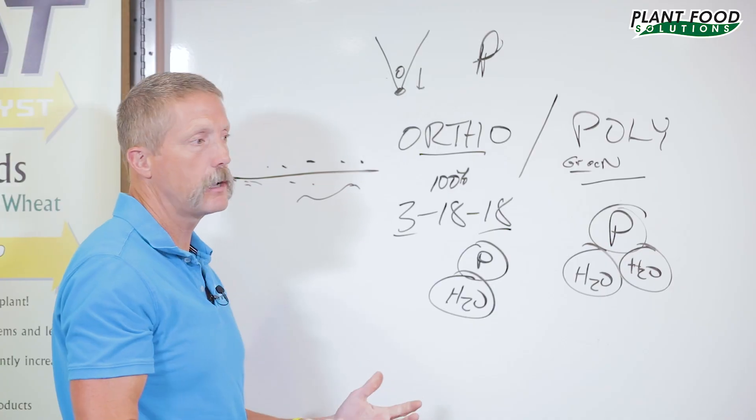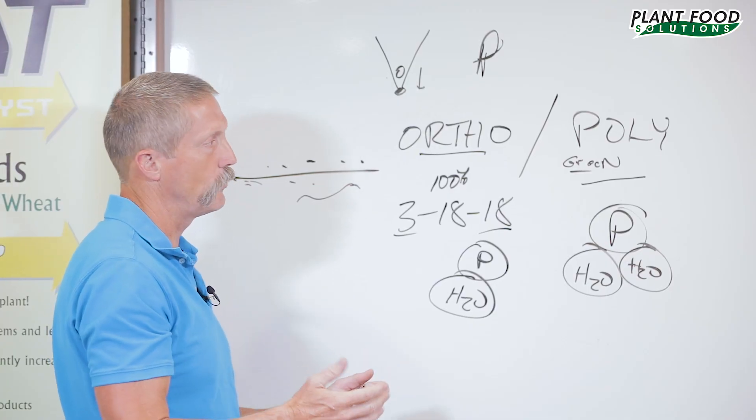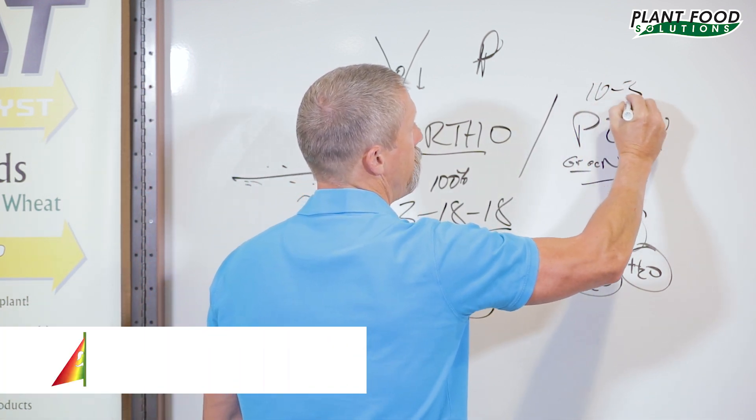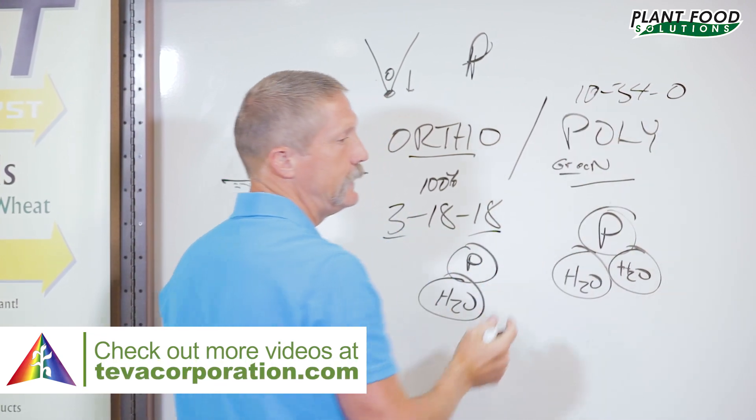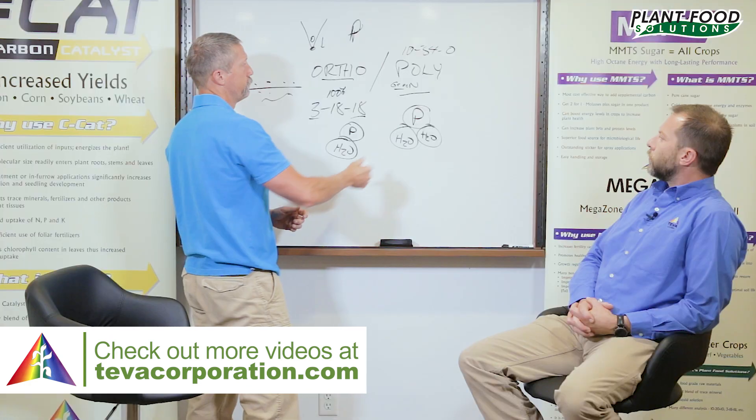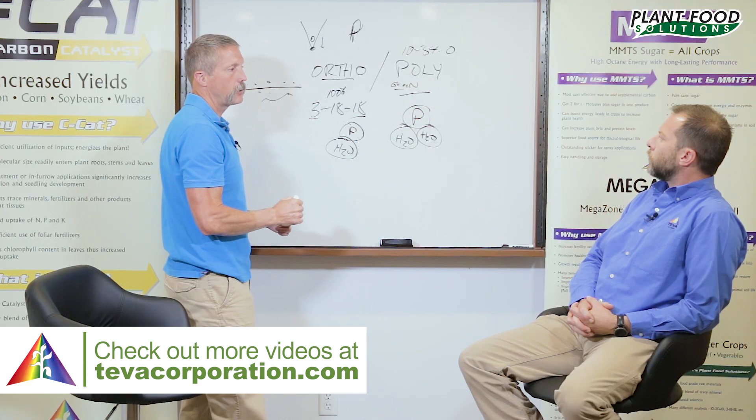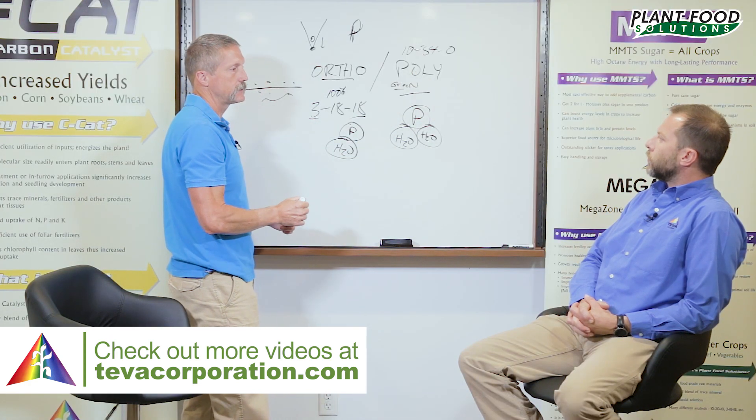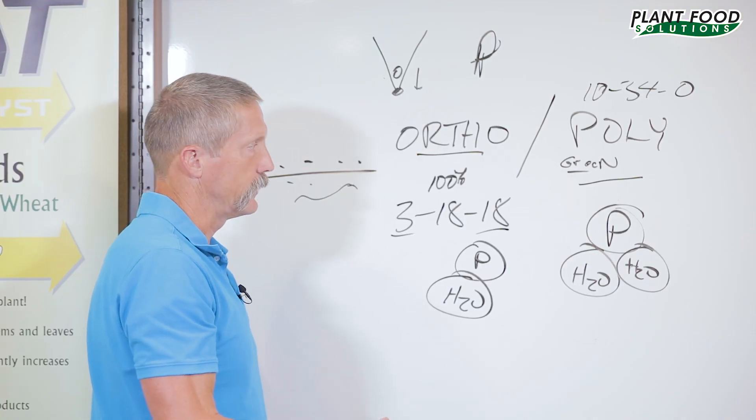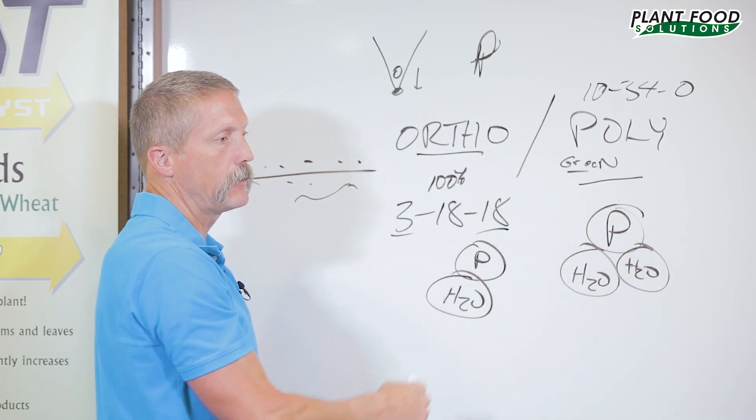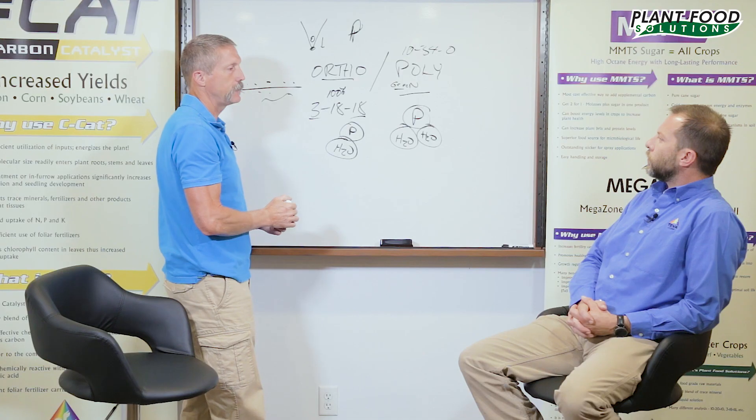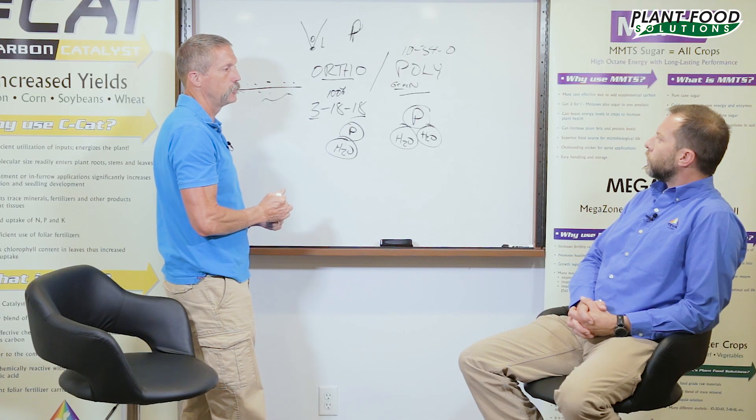There's lots of products out there. Like a good example, this 10-34-0 is a polyphosphate. That's why it's green. You really need to study on what you're getting. They like using poly in the product because it's cheaper. So they can sell it to you cheaper, but just remember, it's like getting a gallon of gasoline or a gallon of rocket fuel. I'd rather have something that's going to give me more energy, more bang for my buck. That's the biggest differences on those two products.